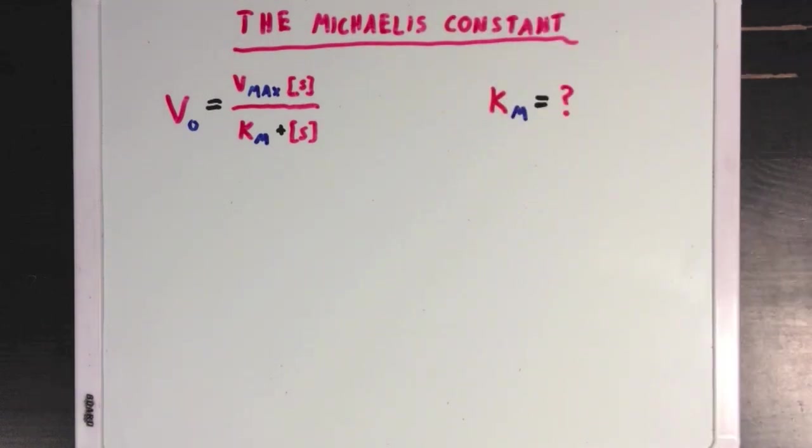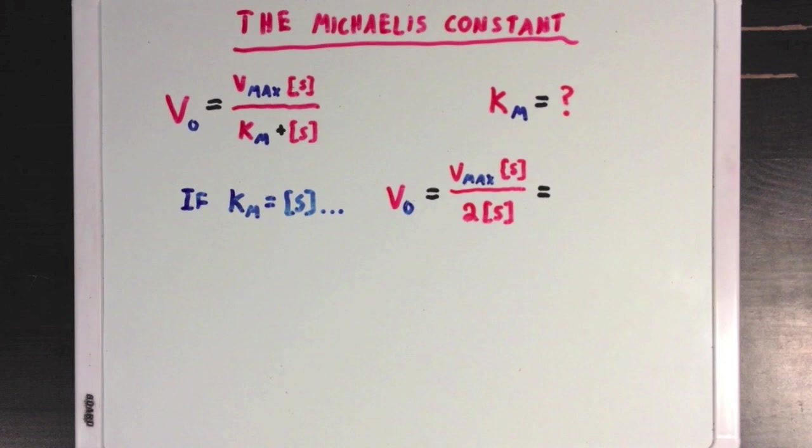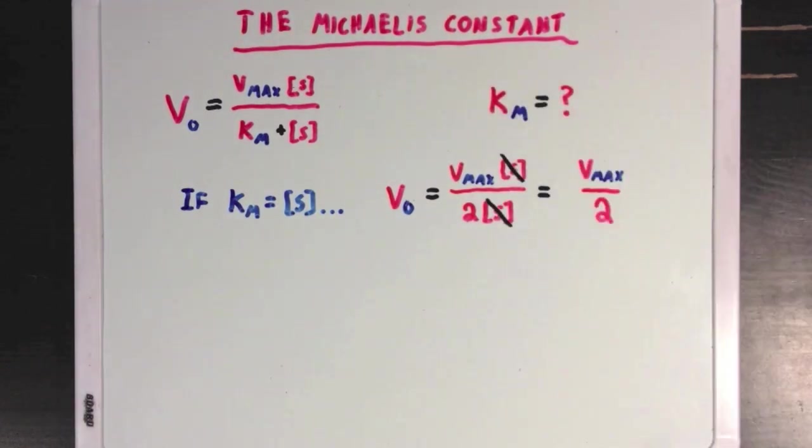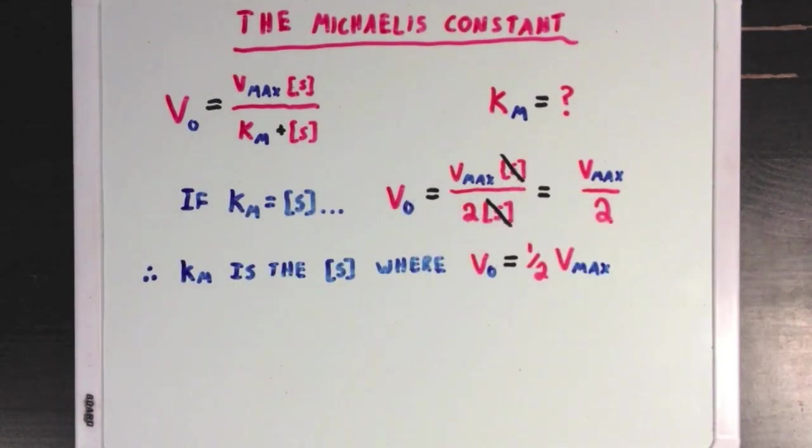Now if you bear with me for a moment and pretend that Km is equal to our substrate concentration, then we can sub in that value into our Michaelis-Menten equation, which would put 2S on the bottom, the sum of S plus S, and then the S will cancel out, and we'll be left with Vmax over 2. And what this means is that Km, which we call the Michaelis constant, is defined as the concentration of substrate at which our reaction speed is half of the Vmax. So when VO is equal to one half of Vmax.